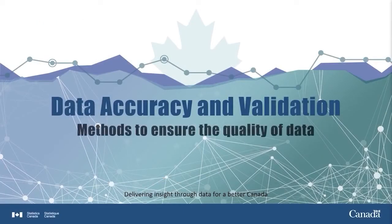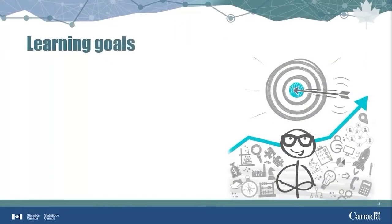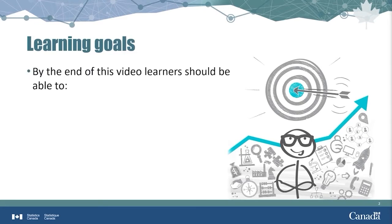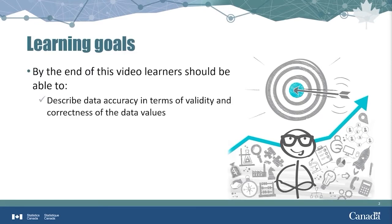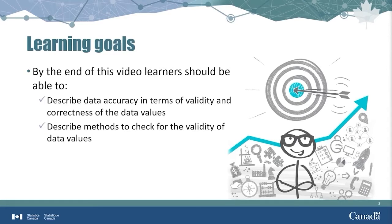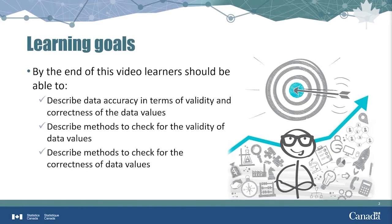Assessing the accuracy of data is an important part of the analytical process. Accuracy is one of the six dimensions of data quality used at Statistics Canada. Accuracy refers to how well the data reflects the truth, or what actually happened. In this video, we will present methods to describe accuracy in terms of validity and correctness, and also discuss methods to validate and check the accuracy of data values.